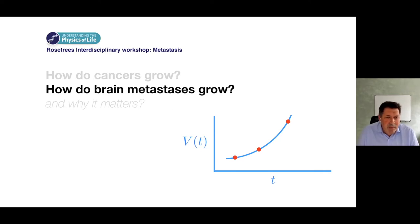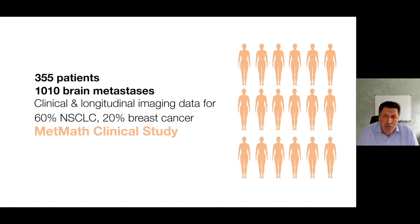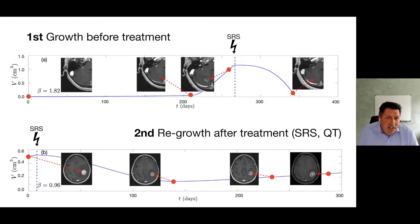Let's go back to how brain metastases grow. We wanted to know whether this super-exponential growth also happened in brain metastases. We started this MedMath clinical study. We included 350 patients, meaning more than 1,000 brain metastases with clinical data, diagnosis, typical molecular diagnostic studies, and longitudinal imaging data. We have many non-small cell lung cancers, some breast cancers, and others. What you have essentially first is growth before treatment. You expect metastases without treatment are growing. There you have just one example. You see the exponent, in this case it's 1.8, much larger than 1.